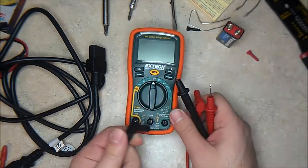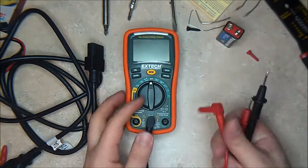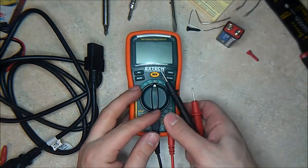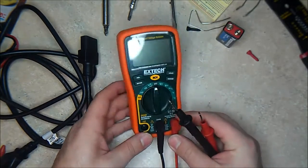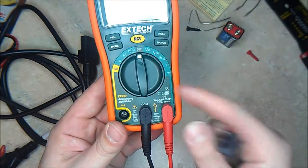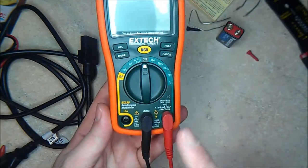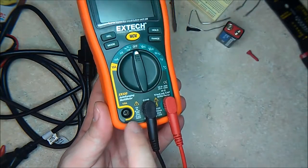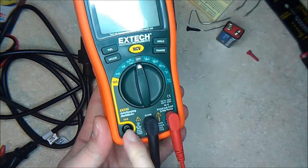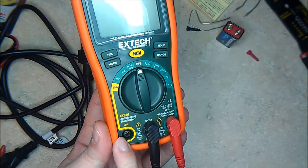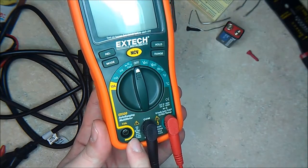Always remember to have the negative lead on the common, and then you have the positive lead on the voltages. If you want to measure amps, you will have to put it in here. Just always pay attention to the warning that it tells you. In this case, if you want to measure 10 amps, you can do so for 30 seconds maximum.